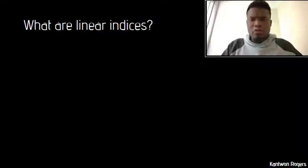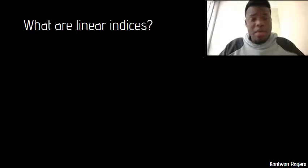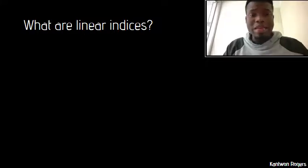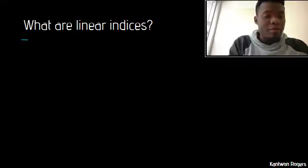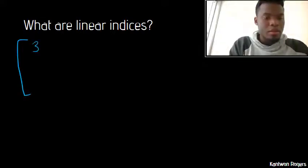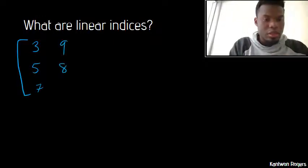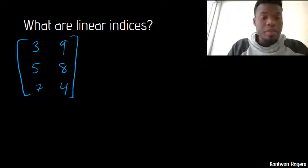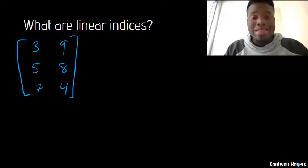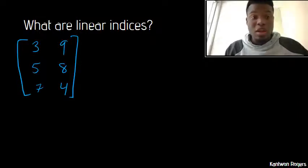So what are linear indices? When we talked about arrays, we kind of just said that they were multidimensional vectors. However, the way that they're stored in memory is as vectors. So if I have an array that's 3, 5, 7, 9, 8, and 4, there's no way that I can save this array in memory as a 3 by 2 entity.